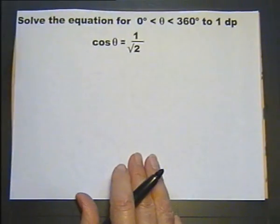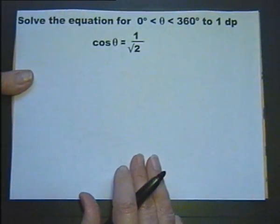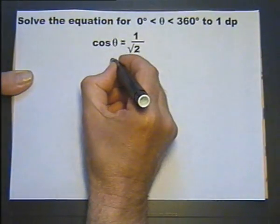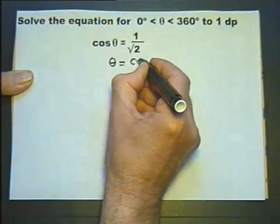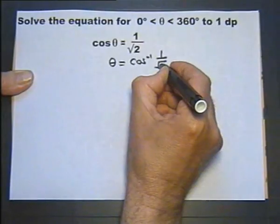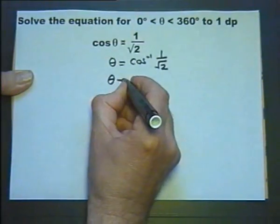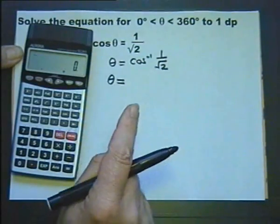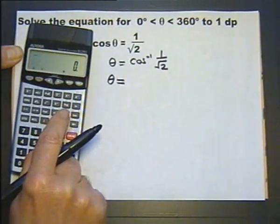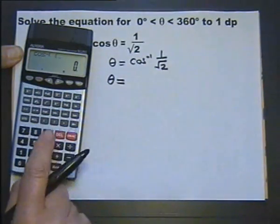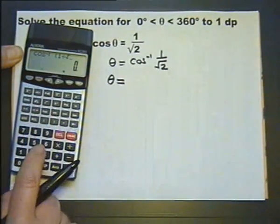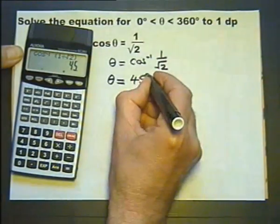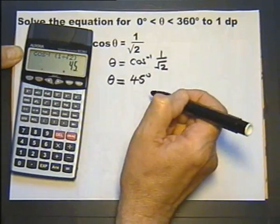Solve the equation for values of theta between 0 and 360 degrees. Inverse cosine both sides. The inverse cosine of cosine theta is theta itself, and the inverse cosine of this value will give us the answer to what theta is. There are several ways you can type this into the calculator. I'm going to do inverse cosine, open brackets, one divided by the square root of two, close brackets, equals. And I get 45 degrees. In fact, this is something I should recognize, but we'll come back to that.